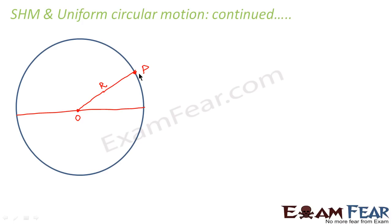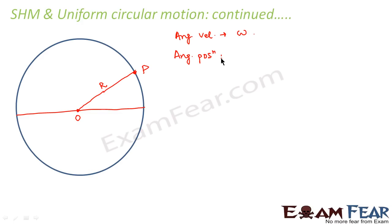Now for any particle at any point of time along this circle, this particle is moving with angular velocity omega. Now what would be the angular position of the particle? When we talk of circular motion, we talk of quantities like angular velocity and angular position, because the position of the particle is basically determined by the angle it makes to the center of the circle. So the angular position will be given by this angle theta — theta determines the angular position of the particle.